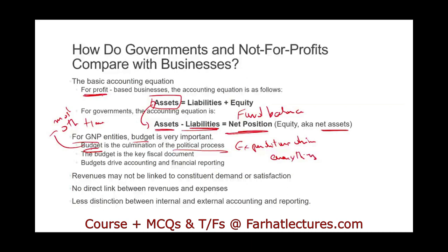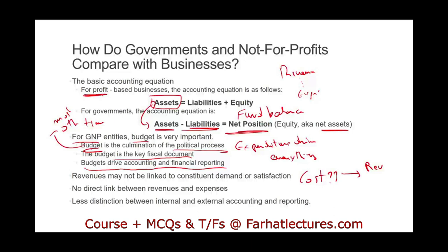What government does is determine how much a service should cost, and then tries to generate revenue. Notice the order: determine the cost first, then generate revenue. In a business, it's totally different — you determine how much revenue you can generate, then expenses follow. The cost for the government is reflected in the budget, and the budget is the most important fiscal document. Budgets drive accounting and financial reporting.